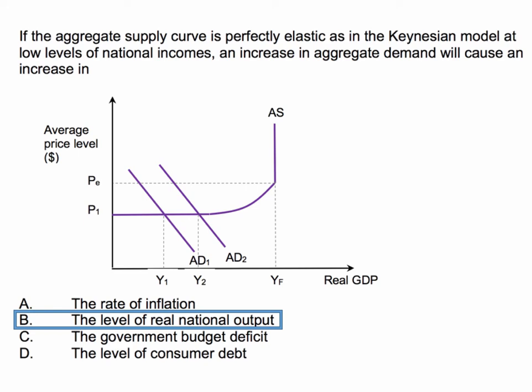It won't necessarily cause an increase in consumer debt — that's not really part of the model. It could be the case that consumers have borrowed to bring about an increase in spending which causes the AD curve to shift out, but that's cause rather than effect, so the answer isn't D.